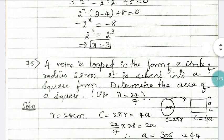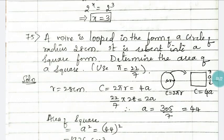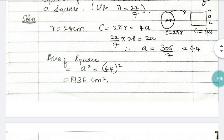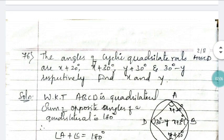Question 75: a wire is looped in the form of a circle of radius 28 cm and rebent into a square form — determine the area of the square. Since the circumference of a circle equals the perimeter of the square, and perimeter of a square is 4a, find the value of a, then put it in the area formula. The area of the square is 1936 cm².